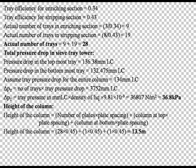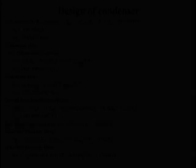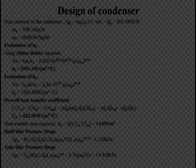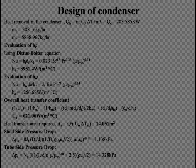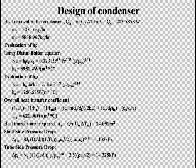The height of the column is 13.5 m. Design of condenser: The overall heat transfer coefficient U₀ was calculated as 621.06 W per m² per degree Celsius.